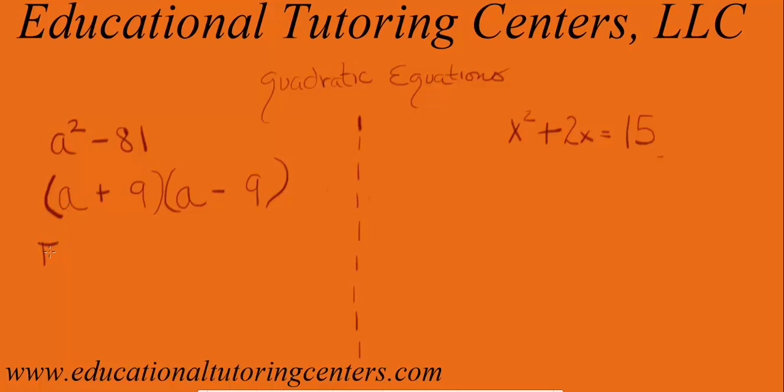you can do the foil method on here. And when you foil, you're taking the first item, which is A, and the first item here, which is A. So you're doing A times A, which equals A squared.